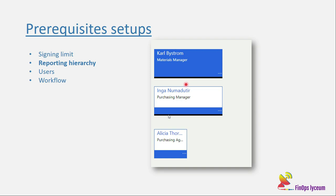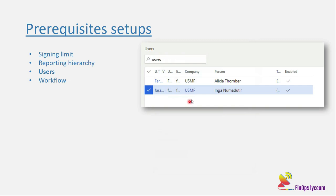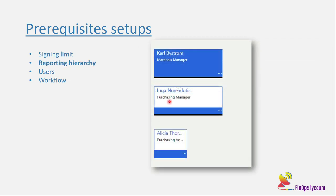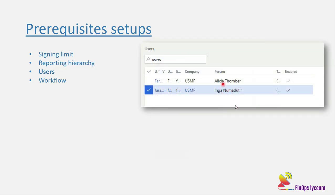The third important thing: we need to make sure that the people involved in the workflow have a user attached. A person should be attached to a user ID. If a worker is not attached to a user ID, the workflow will fail. Both people involved in the workflow scenario must each be linked to a user ID.